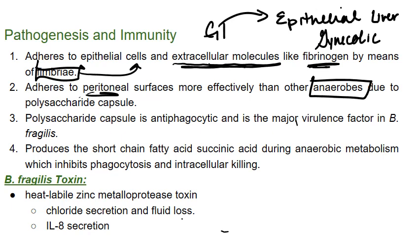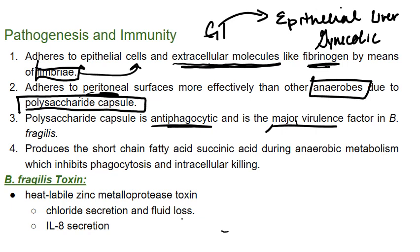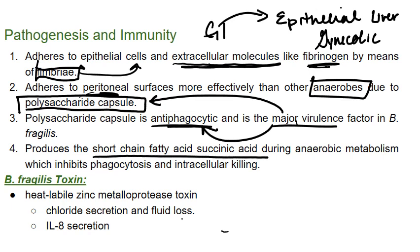Part of the reason it's able to adhere to peritoneal surfaces is that gooey, slimy polysaccharide capsule. The polysaccharide capsule is antiphagocytic, but it is also the major virulence factor in B. fragilis because it stops phagocytosis while allowing the organism to bind to peritoneal surfaces. The organism is also able to produce a short chain fatty acid — succinic acid — during anaerobic metabolism, and that's another way of inhibiting phagocytosis. And even if the organism is phagocytosed, this short chain fatty acid actually inhibits the intracellular killing that the phagocyte would perform.